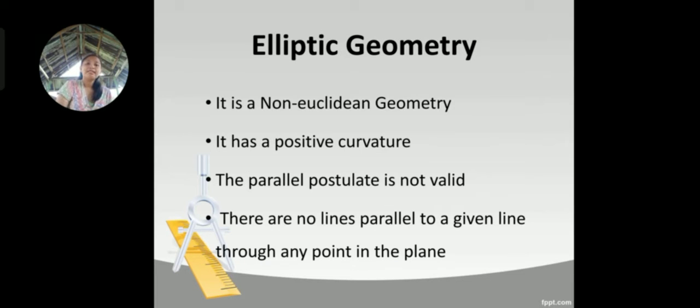Elliptic geometry is a non-Euclidean geometry. It has a positive curvature. The parallel postulate is not valid. There are no lines parallel to a given line through any point in the plane.